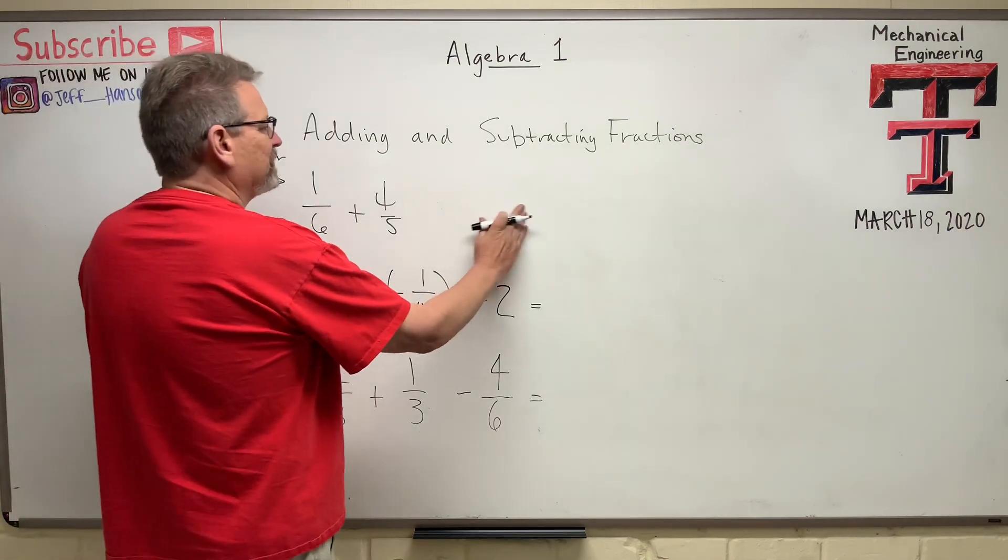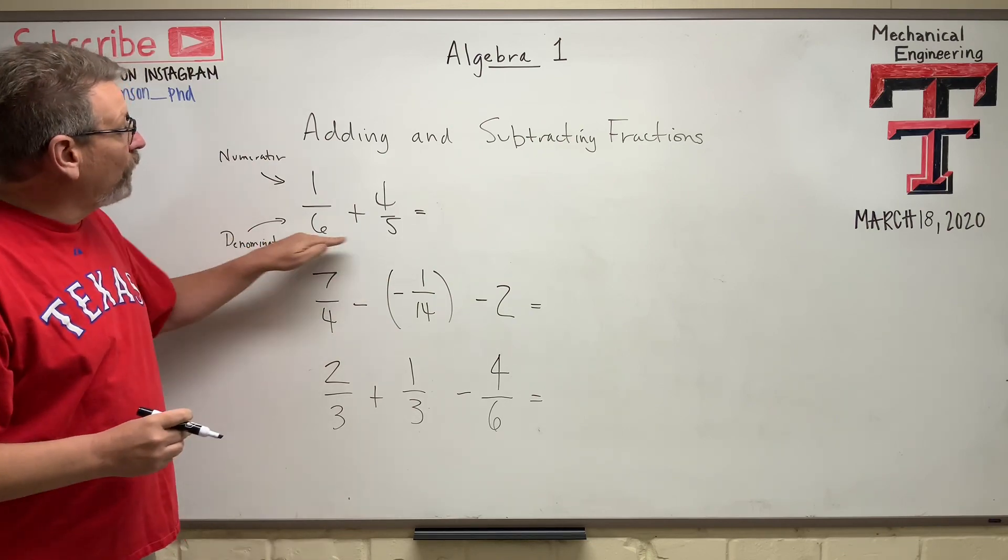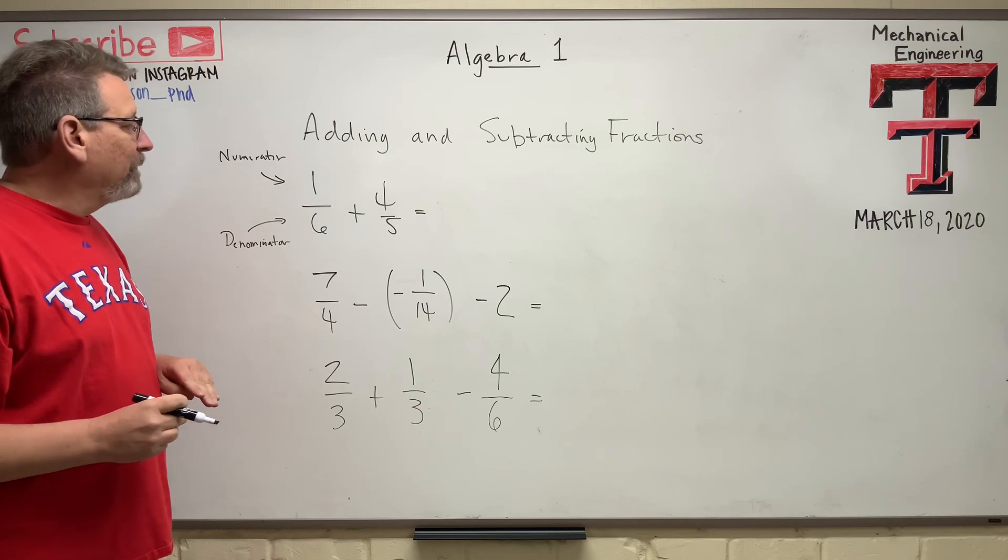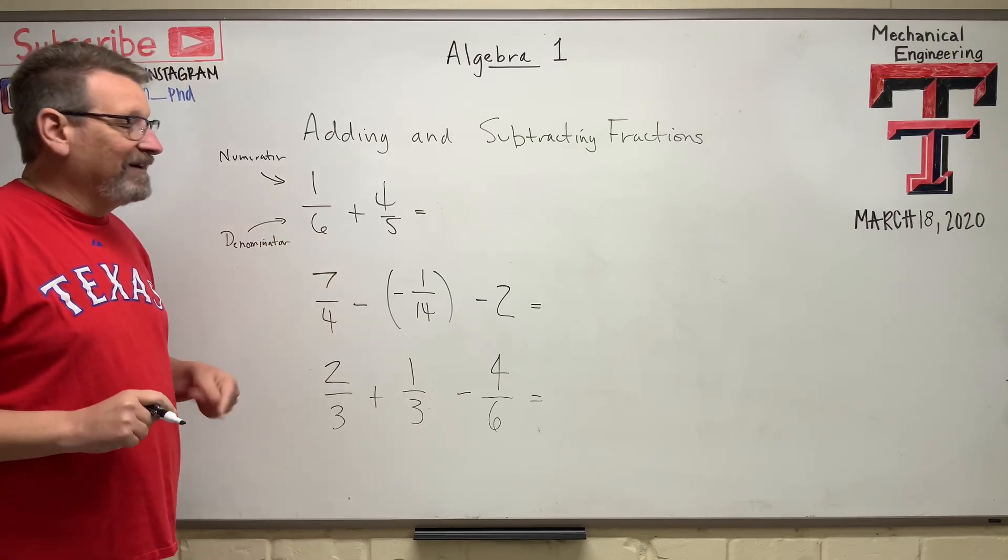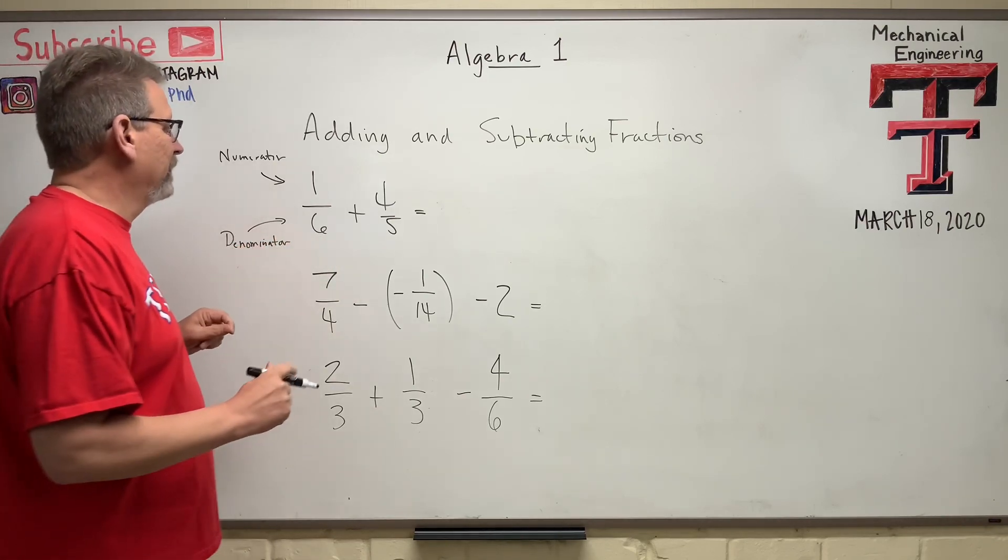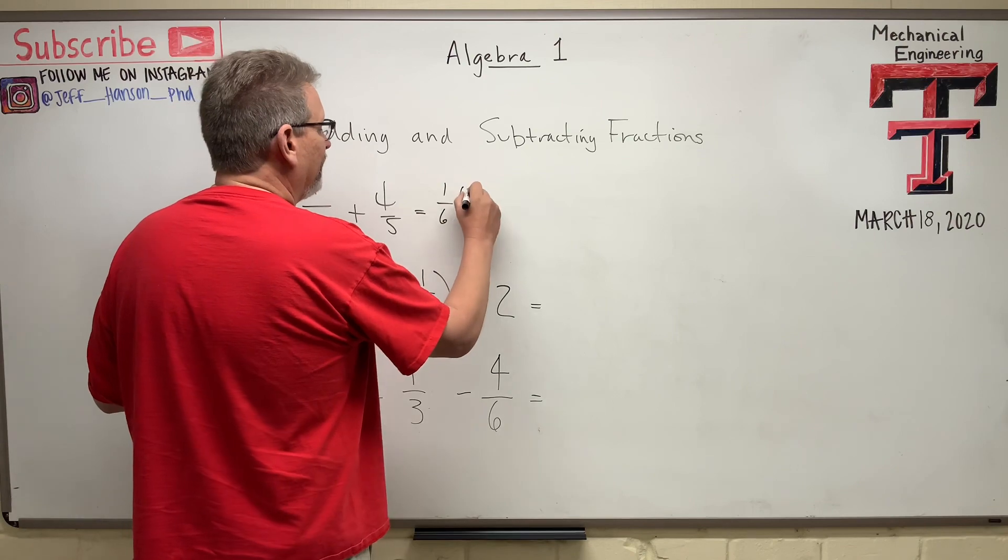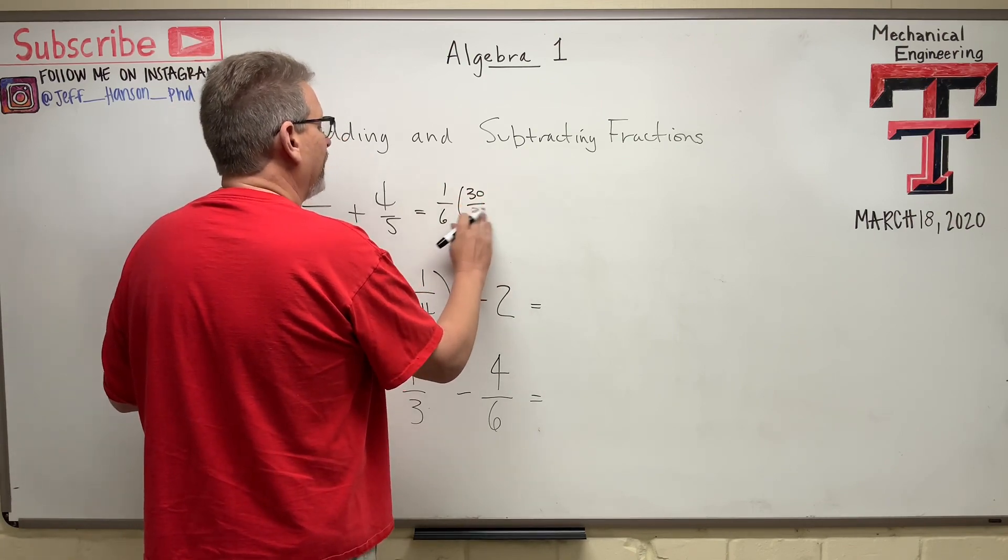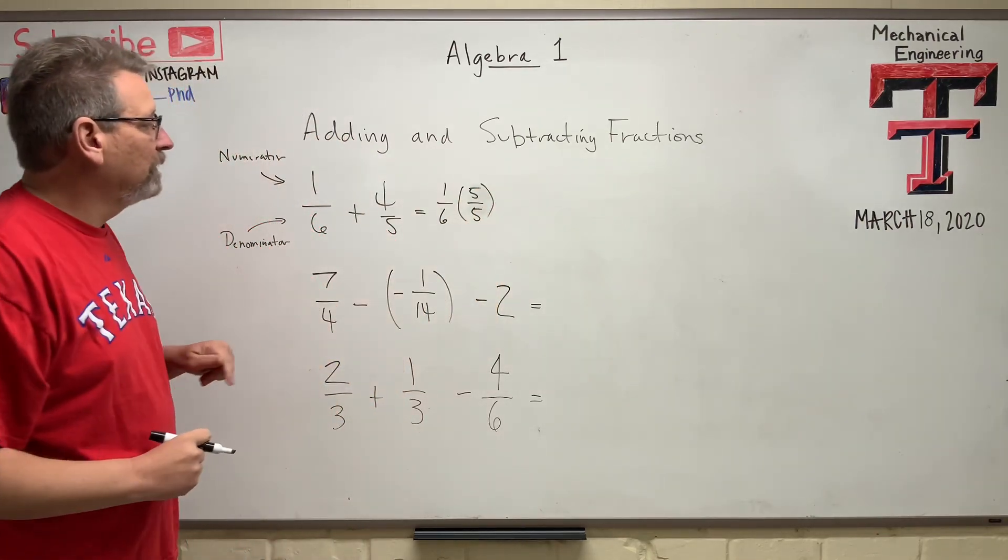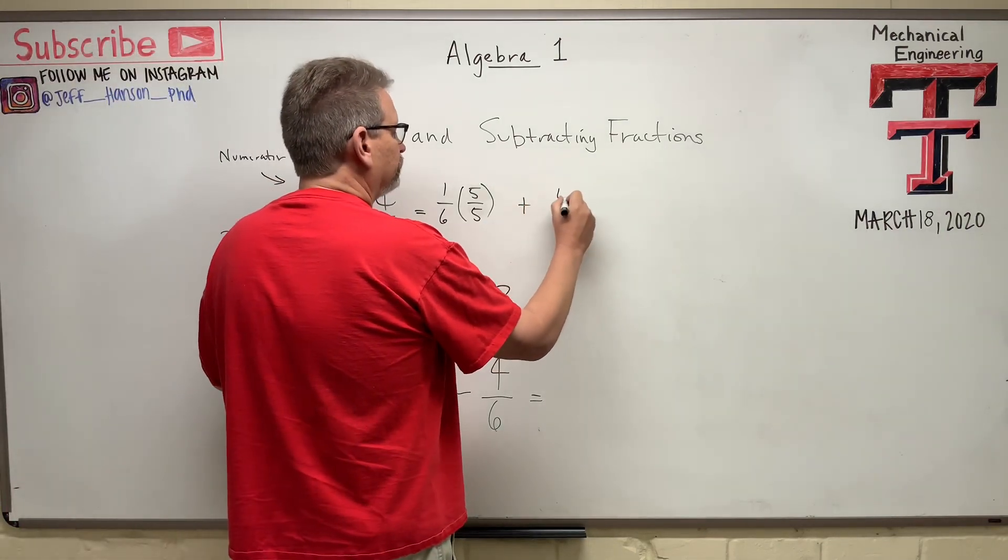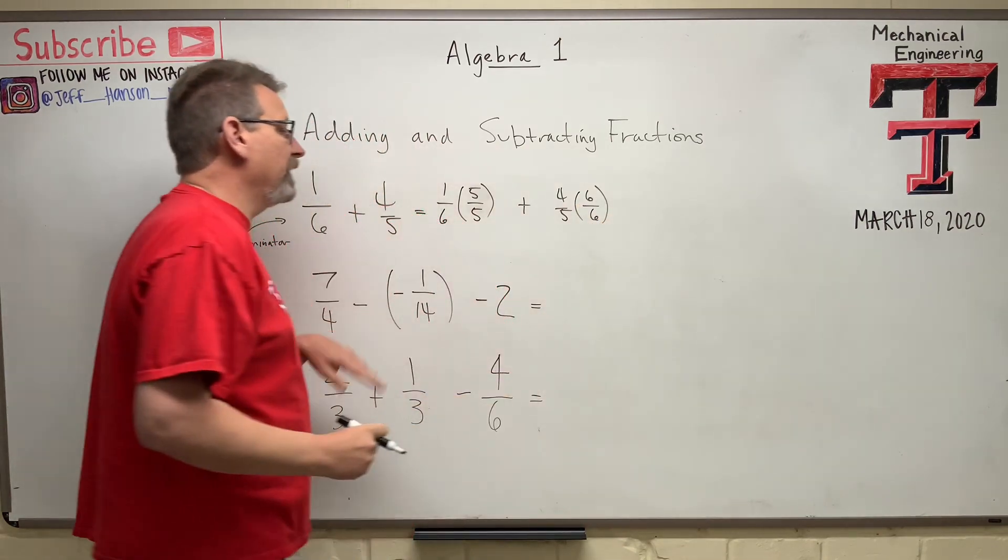So the only way you can add fractions together is if the denominators are common. You can't add a six plus a five because they're not the same. So how do I make them the same? I'm going to have to find a least common multiple. We did that in the last video, of six and five. I think the least common multiple of six and five is 30. So what I'm going to do is I'm going to take one-sixth, and I'm going to multiply it by five over five. And then the four-fifths, I'm going to multiply that by six over six.